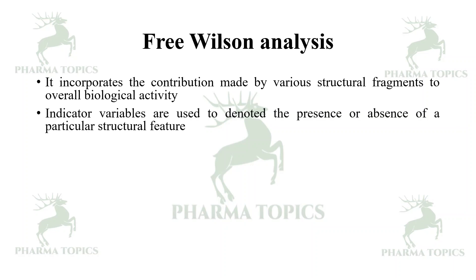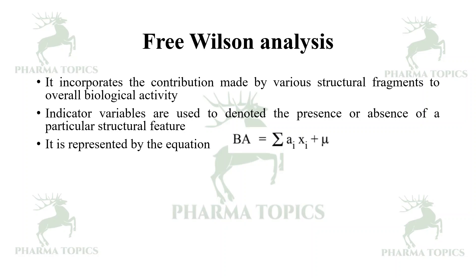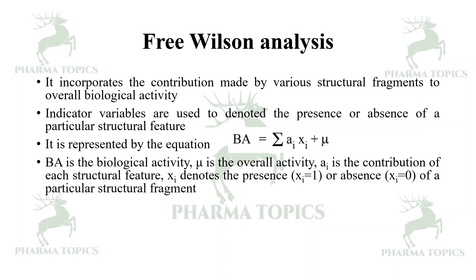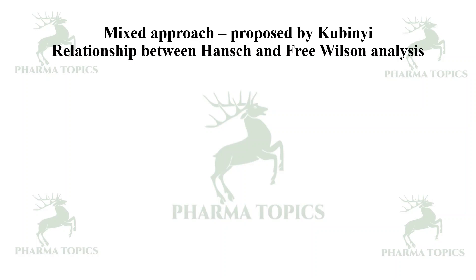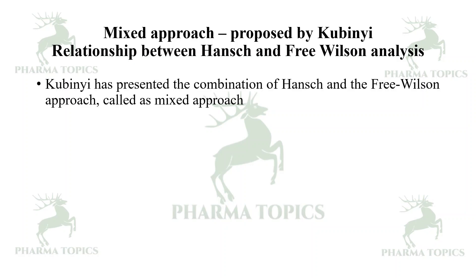Free-Wilson analysis incorporates the contribution made by various structural fragments to overall biological activity. Indicator variables denote presence or absence of a particular structural feature. The equation is: BA = Σ(aᵢxᵢ) + μ, where BA is biological activity, μ is the overall activity, aᵢ is the contribution of each structural feature, and xᵢ = 1 for presence or 0 for absence of a structural fragment. A major drawback was the large number of parameters causing loss of statistical degrees of freedom.